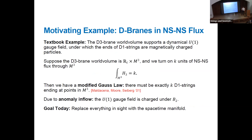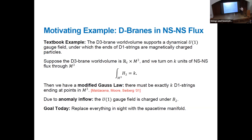This modified Gauss law in cobordism is a gravitational version of something very familiar, so I thought I would give you a familiar example and then work by analogy. The D3 brane world volume supports a dynamical U(1) gauge field, which has charged magnetic particles that are the ends of D1 strings. If the D3 brane world volume wraps a cycle on which we've turned on K units of NS-NS flux, then we have a modified Gauss law. The normal Gauss law for magnetic monopoles says that the net magnetic charge in a closed manifold should vanish, since each monopole radiates magnetic flux that must end on an equal and opposite charge. But in the presence of this background, we must have precisely K D1 strings ending at points in M3, as taught by Maldacena, Moore, and Seiberg in 2001.